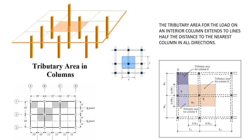We looked at tributary area at the beginning of the semester when we looked at the gable roof over a simple house, and said it's a flat area. When talking about a floor with columns, you have to think about the area around each column — you take half of whatever the distance is to the next support. The tributary area for the load on an interior column extends to lines half the distance to the nearest column in all directions. So when you take a column out, you calculate loads going a bit further to that column. With those different shaded areas and that information, you can use square footage and dead weights and loads to calculate that.